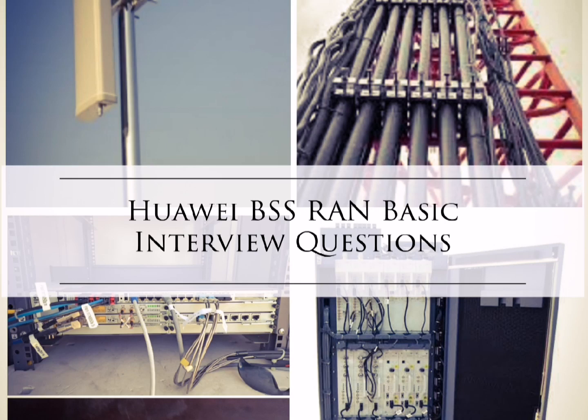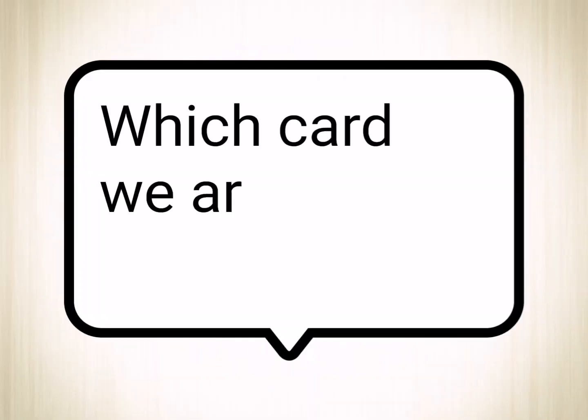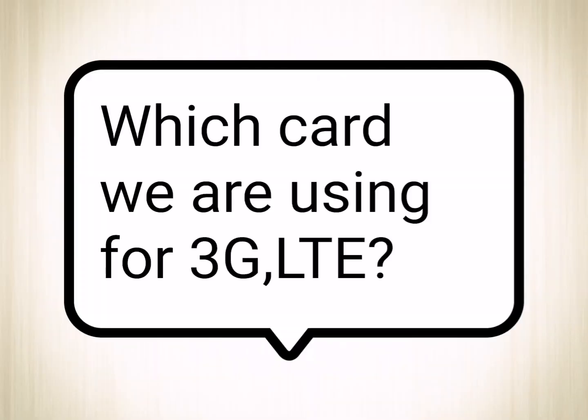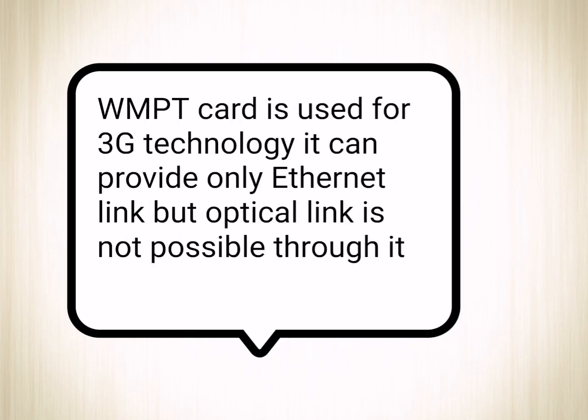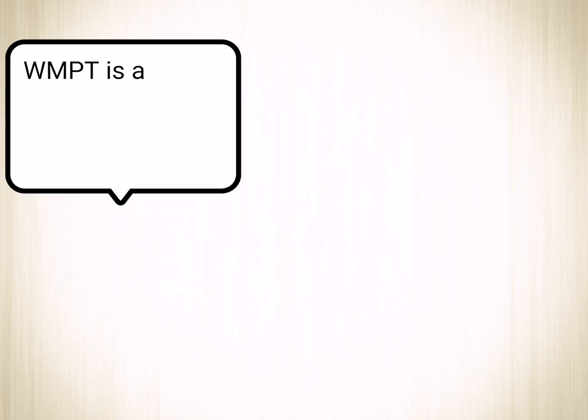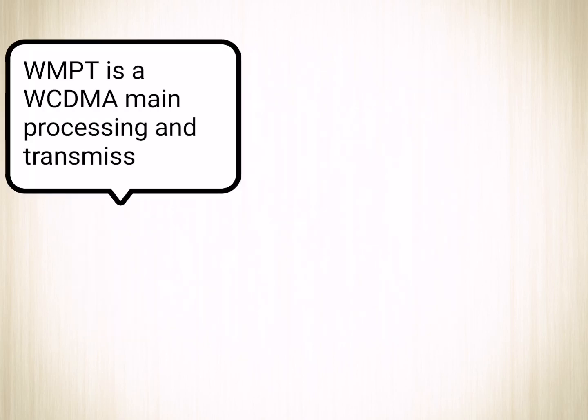Today I will discuss Huawei BSS RAN basic interview questions. Starting from question number one: which card are we using for 3G LTE? The WMPT card is used — it can only give Ethernet connectivity.